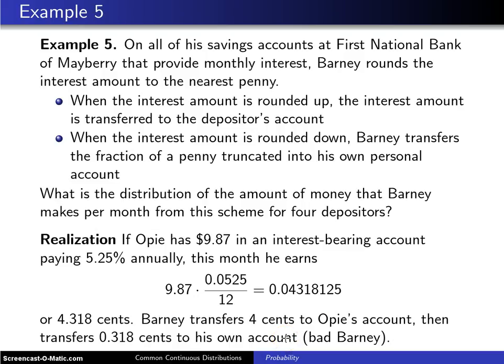Now he is not going to make much money off of this if there are just four depositors. But if there was a bank and it had 40,000 or 50,000 or 60,000 accounts, this would actually be a lot of money that was transferred to Barney's account. And that's what actually happened in Chicago.